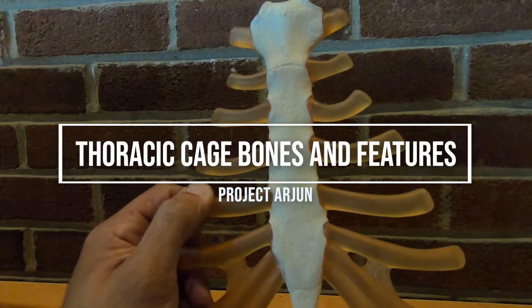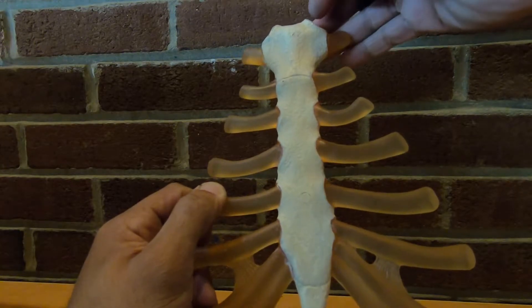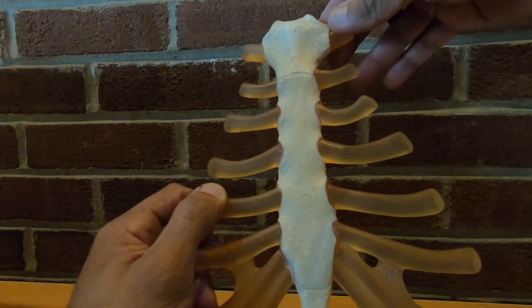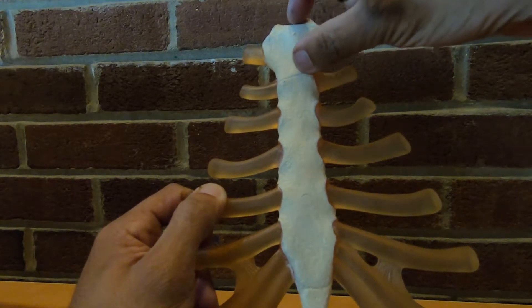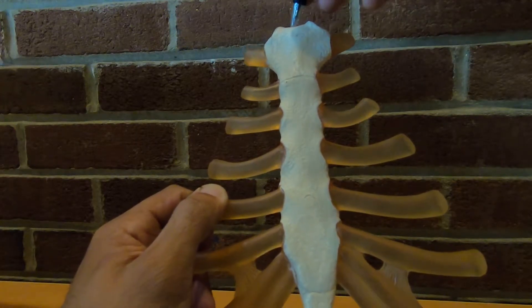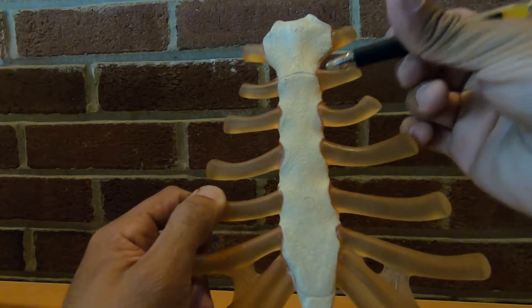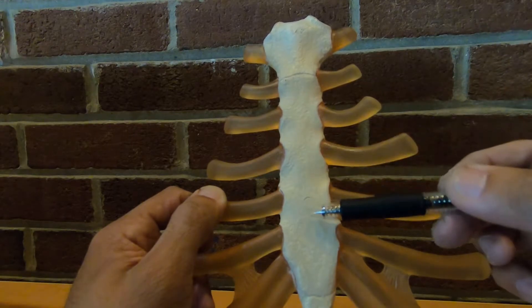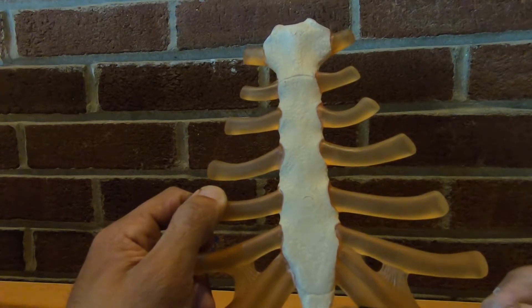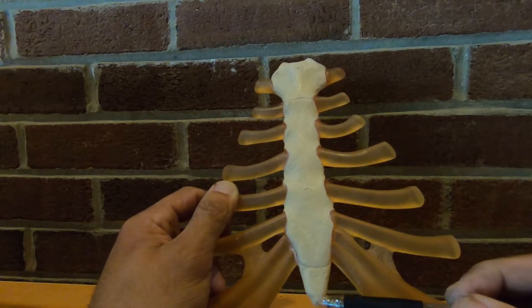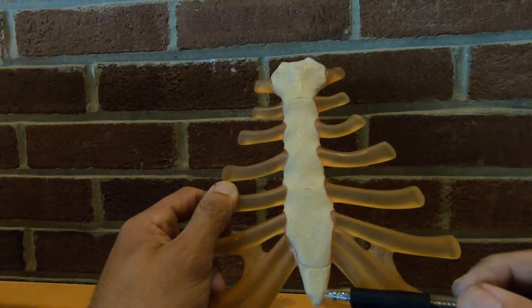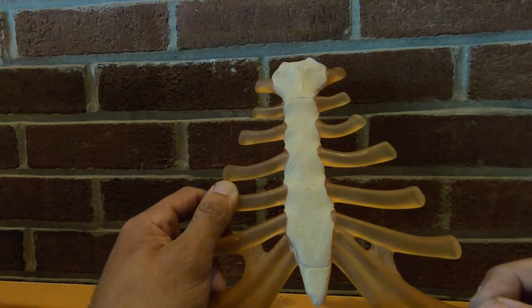So first we're going to start with the sternum. The sternum is divided into three parts that includes the manubrium, which is the top part over here and its notch. This is the body of the sternum, and towards the bottom of the sternum is the xiphoid process.